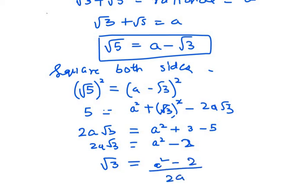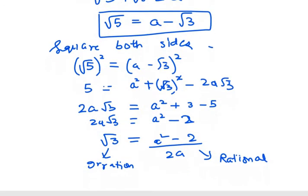Now we can see that √3 is irrational, but on the right hand side we have (a² − 2) / 2a, which is a rational number in the form p/q. This contradicts the fact that on one side we have an irrational number and on the other side we have a rational number.